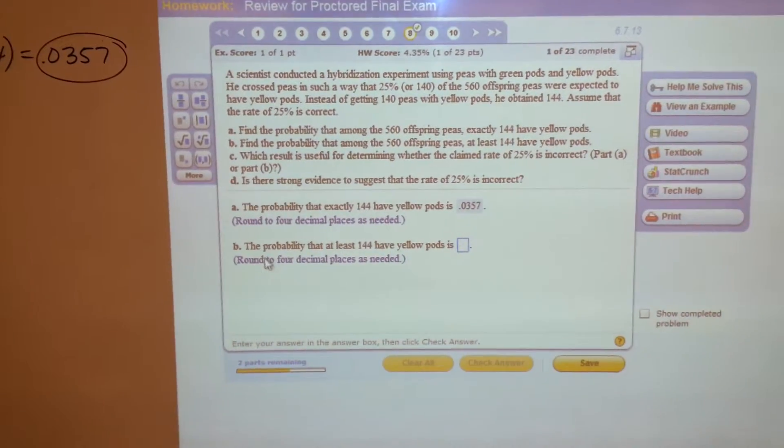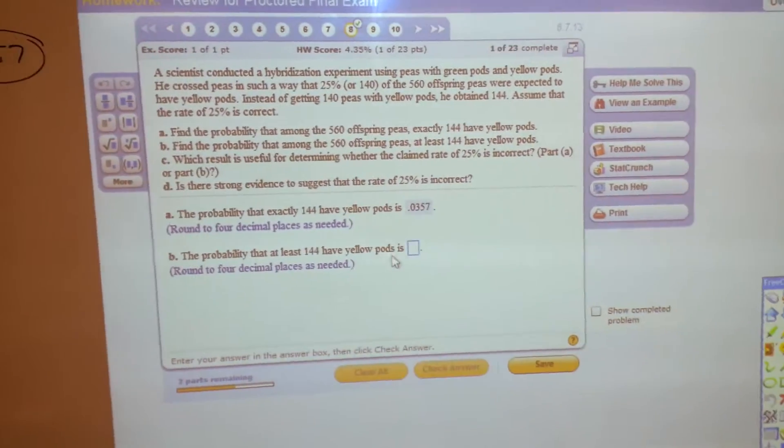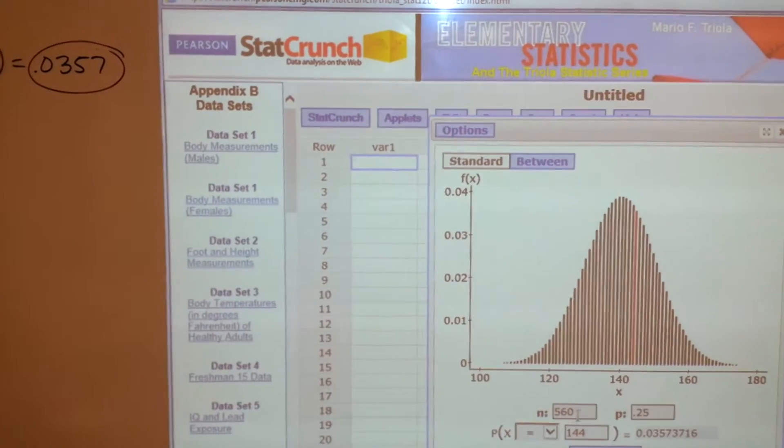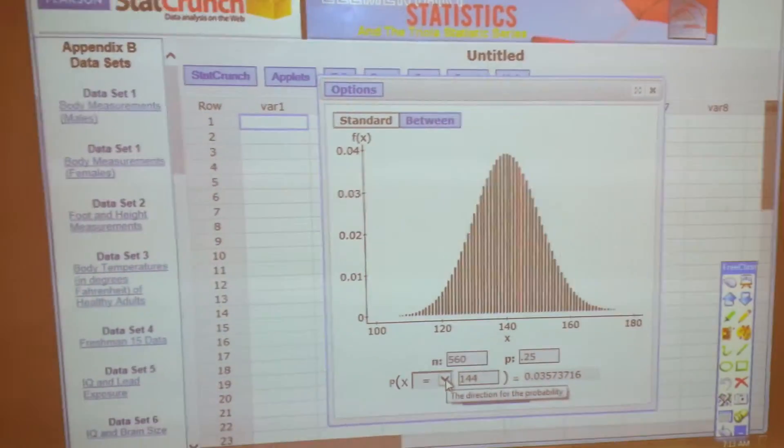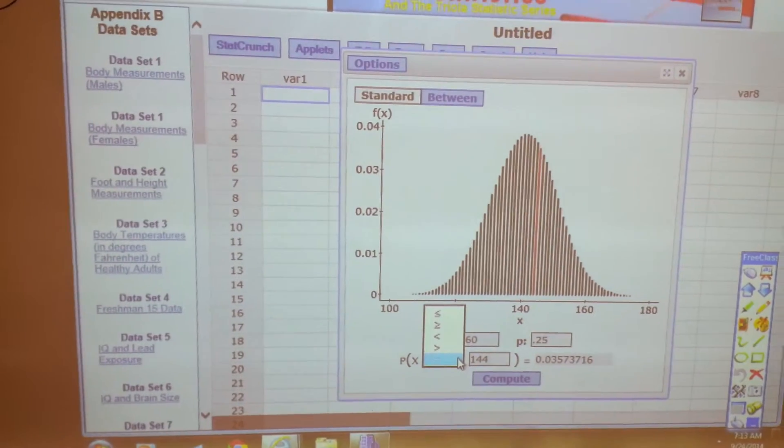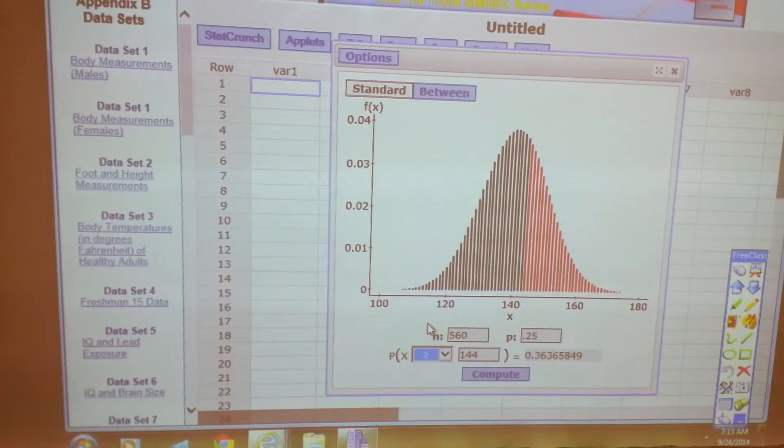Then it asks, what's the probability that at least 144 have yellow pods? Well, all that we have to do to change that is just make a slight modification. At least would mean 144 or more. So we'll say greater than or equal to 144.